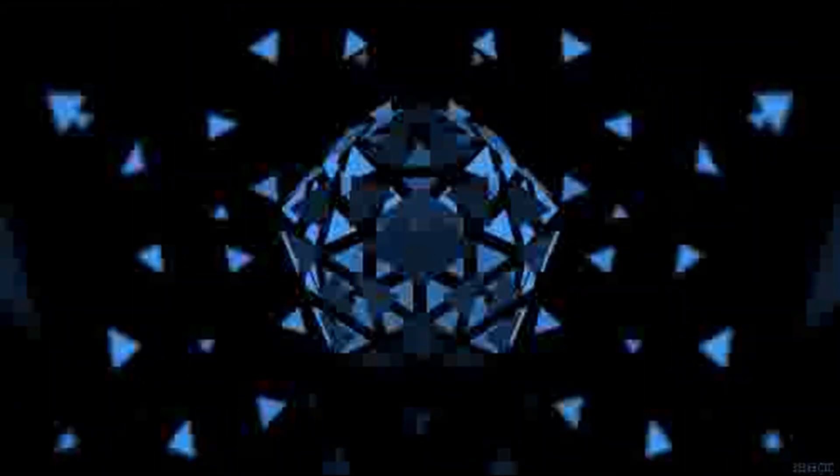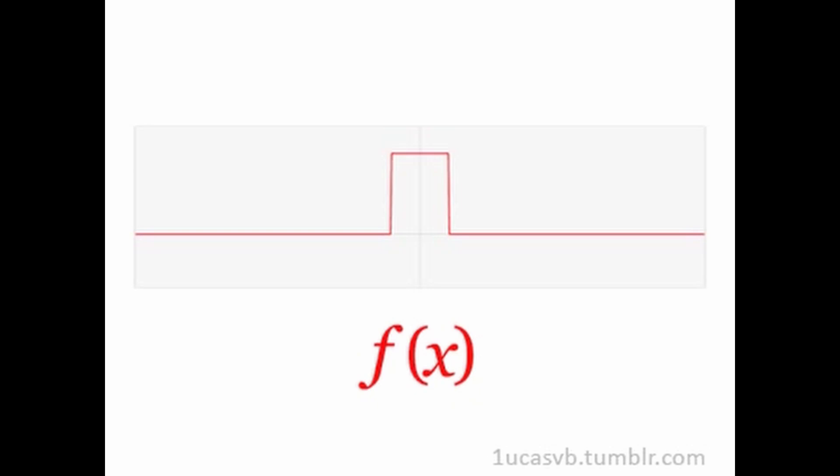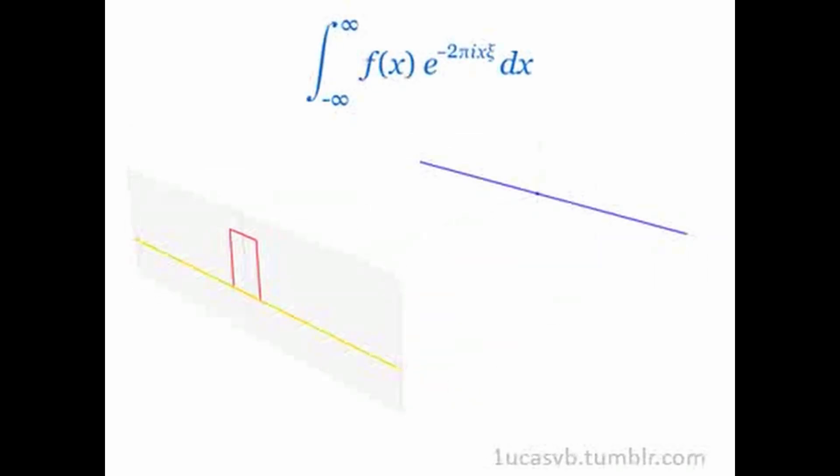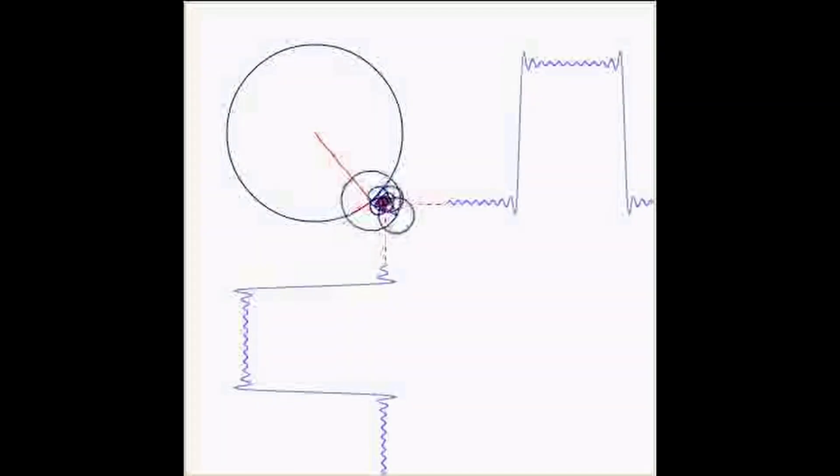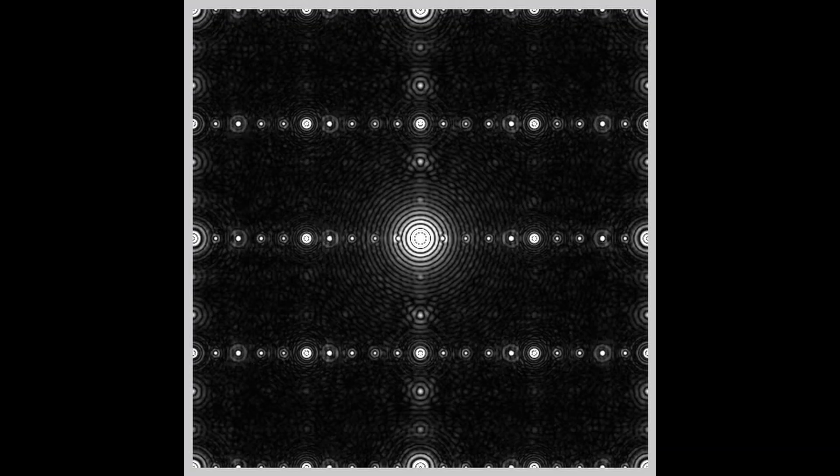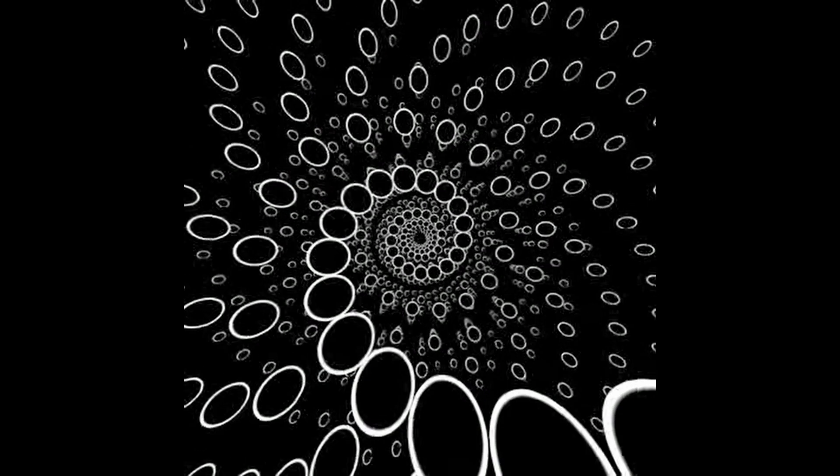Modern computation: With the advent of computers, we can calculate π to an extraordinary number of decimal places. However, the value of π itself is not determined by these computations; rather, the computations are just revealing more of its infinite, non-repeating decimal places. In essence, the value of π is a fundamental aspect of the geometry of circles, discovered through observation and calculation, and it has been recognized for its importance for at least 4,000 years. Its exact value is infinite in length, and we use computational methods to approximate it to the degree of precision required for practical applications.